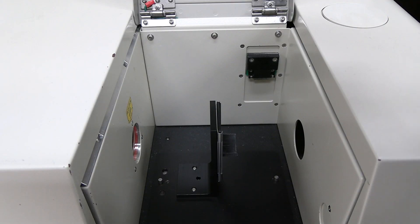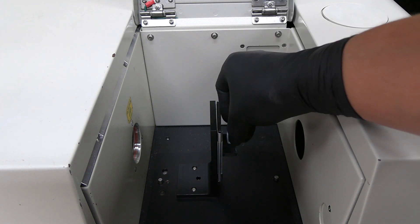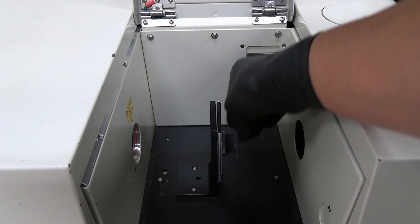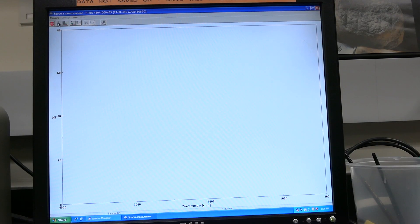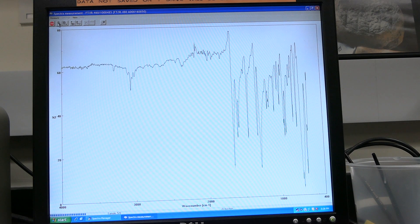If using the plate holder, place the salt plate on the sample holder. Ensure the sample side of the plate is facing towards the right of the sample chamber. Click on the sample button and wait for the measurement to finish.